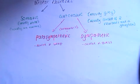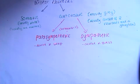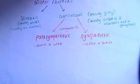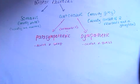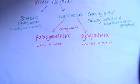Somatic neurons are generally myelinated, which is why they're mostly white matter. Autonomic neurons are mostly grey matter because they're generally non-myelinated. Somatic generally has one neuron to carry the impulse, whereas autonomic generally has a pre-ganglionic neuron, then a ganglion connecting to a post-ganglionic neuron.